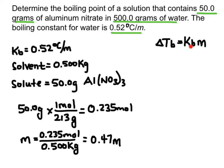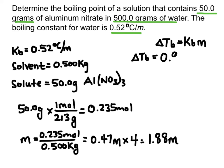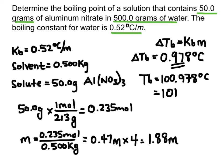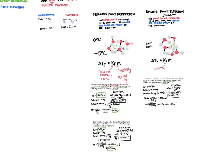Before plugging in, I multiply the molality by the number of ions — four in this case — giving 1.88 molal. Plugging the constant and molality into the boiling point elevation equation gives a change in boiling point of 0.978 degrees Celsius. Since boiling point goes up and the original boiling point of water was 100 degrees, I add the change to get a new boiling point of 100.978 degrees Celsius, which we round to about 101 degrees Celsius. That's colligative properties, including freezing point depression and boiling point elevation.